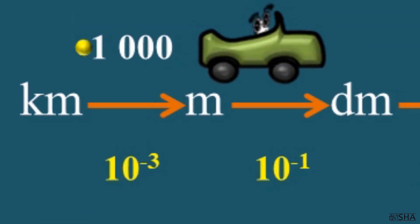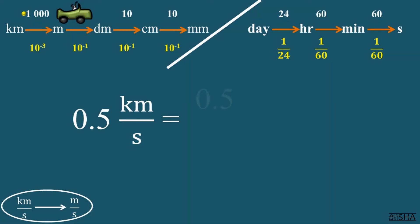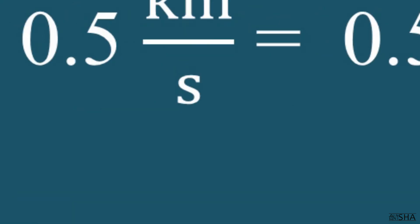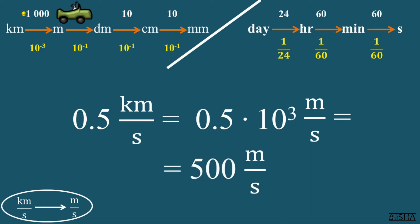That is to meters per second. To do this, kilometers must be converted to meters. 0.5 times 10 to the third power. Time is already given in seconds, so there is no need to convert it. We calculate and get 500 meters per second.